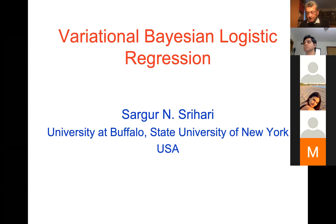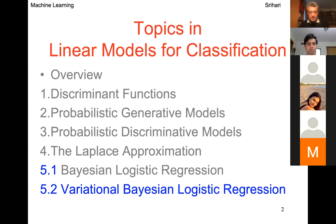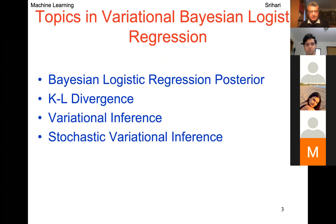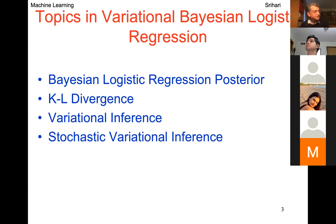To summarize linear models for classification: we did discriminant functions, generative models, discriminative models, Laplace approximation, and Bayesian logistic regression. Today it's variational Bayesian logistic regression. Within this topic, we'll cover the Bayesian logistic regression posterior. We started with the prior distribution of the parameters, which becomes a posterior distribution of the parameters.